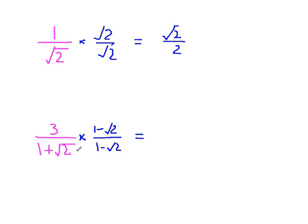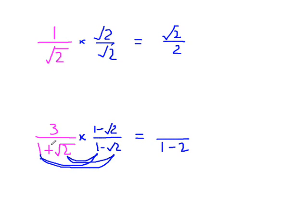Now we get one plus root two times one minus root two in the denominator. The whole point of that is that it should be quite straightforward to find. One plus root two times one minus root two: one times one is one; root two times one is root two; minus root two times one gets rid of the root two; and minus root two times root two is minus two. So we end up with the difference of two squares — it's one squared take away root two squared, which is one take away two. The numerator is three take away three root two.